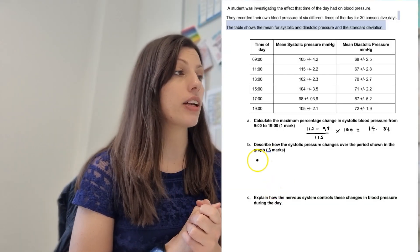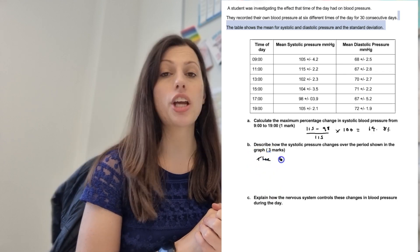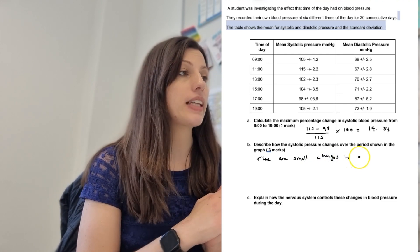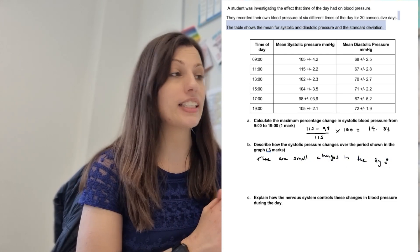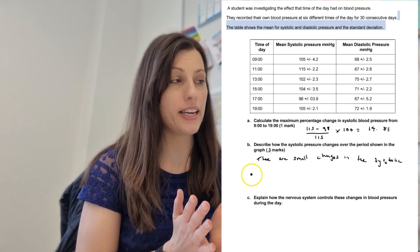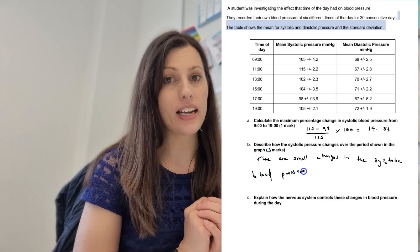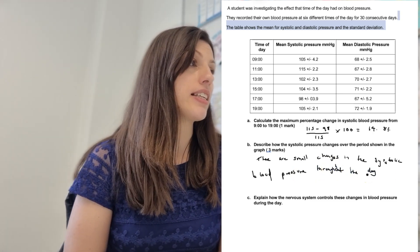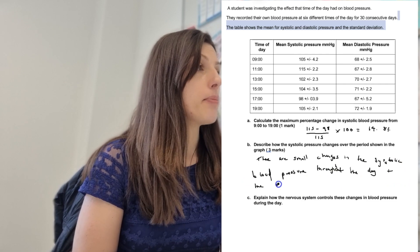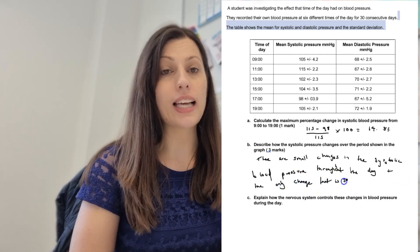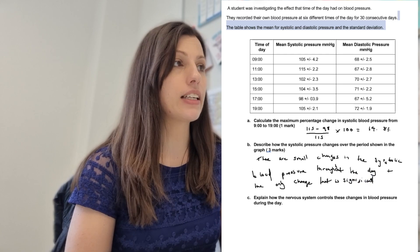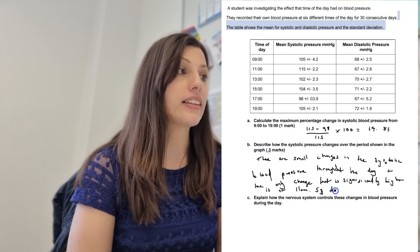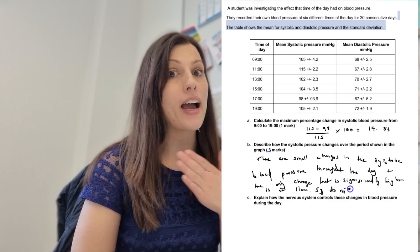Then we have to describe how the systolic pressure changes over the period shown in the table — three marks. The first thing we'd say is there are small changes in the systolic blood pressure throughout the day. Then we need to consider the standard deviation: the only change that is significant is at 11am, because even when we subtract 2.2 standard deviations it still has a larger mean than all of the others. The third mark is that the standard deviations overlap at all of the other times.